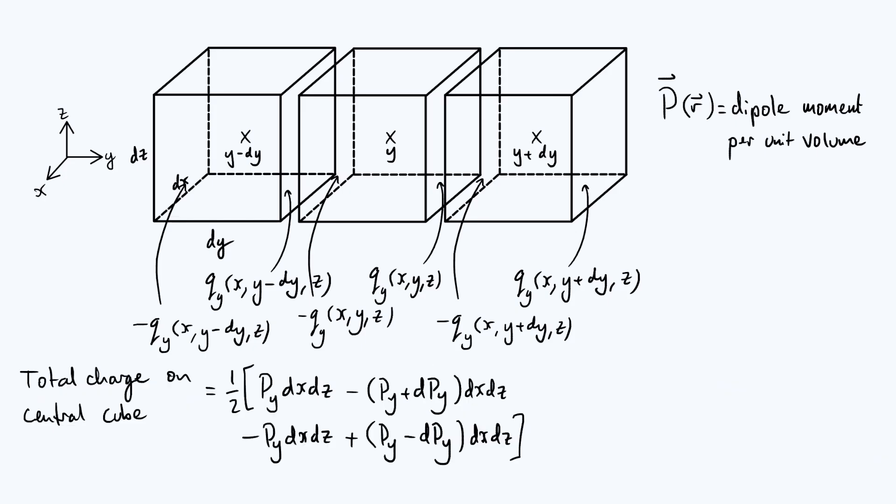Now we can just do some simplifying. Notice that the P_y dx dz terms just cancel. We've got this factor of a half in front. You've also got a P_y dx dz here which is negative and another positive version there so those cancel as well.